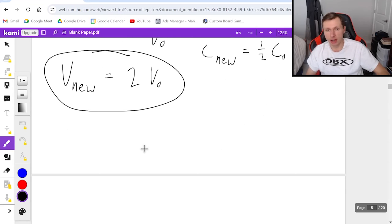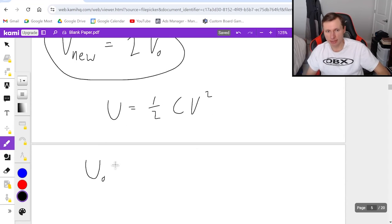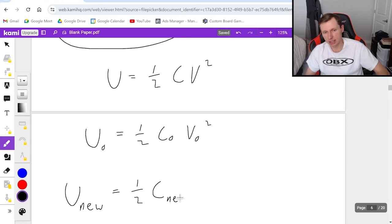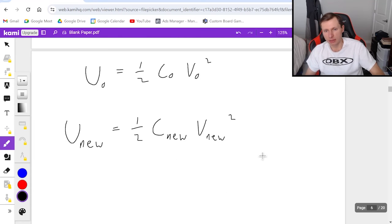And then for part B, they wanted me to find the new energy stored in this capacitor. So I'm going to use the equation U equals one half C V squared. Again, I want to find the original first. So I guess I'll call it U naught equals one half C naught V naught squared. And remember, for the new one, which I'll do right now, it's going to be one half C new V new squared. And we said the new capacitance was one half C naught, the original, and V new was equal to two V naught.